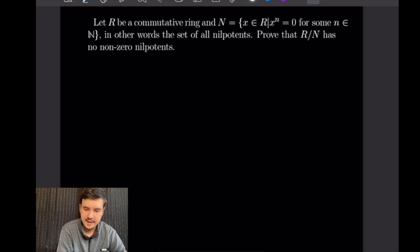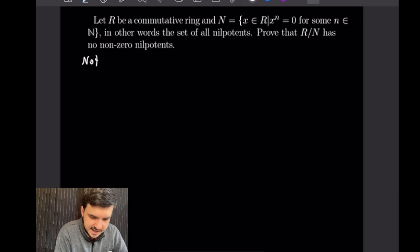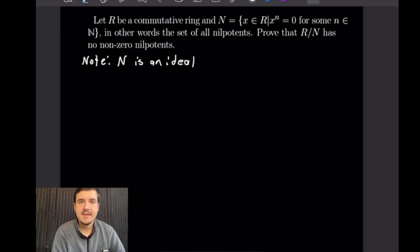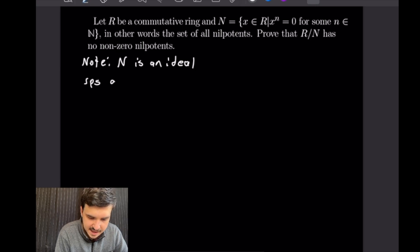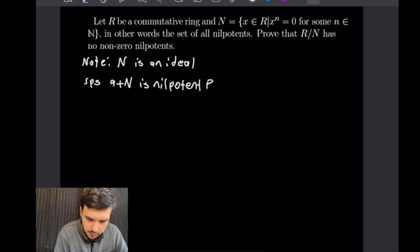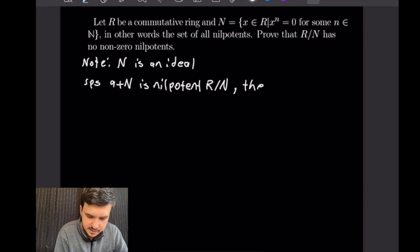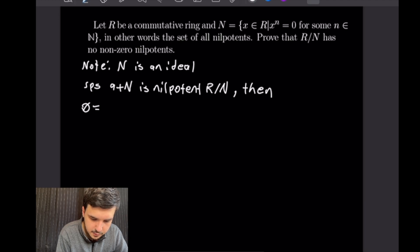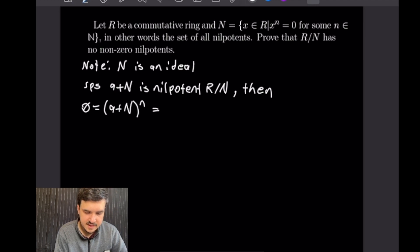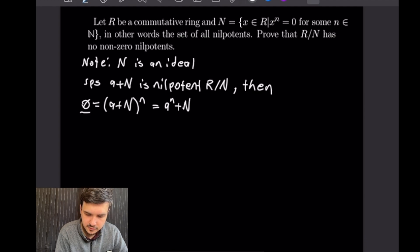First note that N is in fact an ideal. Suppose a + N is nilpotent in R/N. By definition of nilpotent, we have (a + N)ⁿ = 0 + N for some natural number n. Using the rule for taking powers of cosets, this means aⁿ + N = 0 + N, which by definition of cosets means aⁿ is in N.